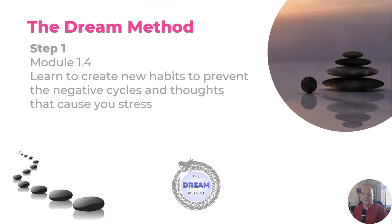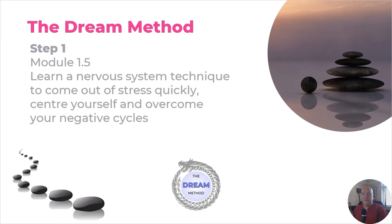Module 1.4 teaches you to create new habits to prevent negative cycles and reduce stress. Stress is enormous in today's world and a major contributor to many diseases. Then finally, module 1.5 teaches a nervous system technique to come out of stress quickly and overcome your negative cycles. In this module you learn quite a few techniques to help you deal with stress and uneasiness, reset your nervous system, and move away from the chemical reactions in your body caused by old emotions and feelings caught up in the cells.